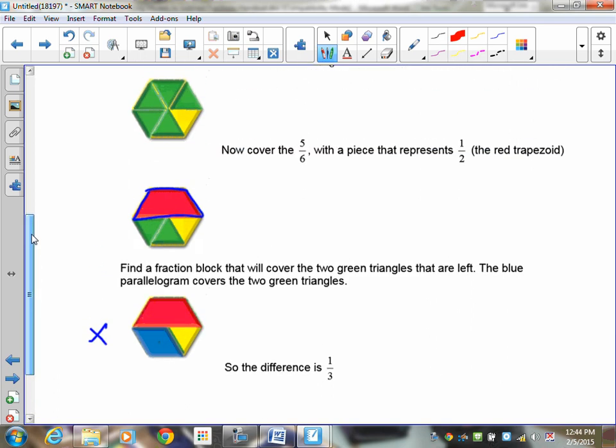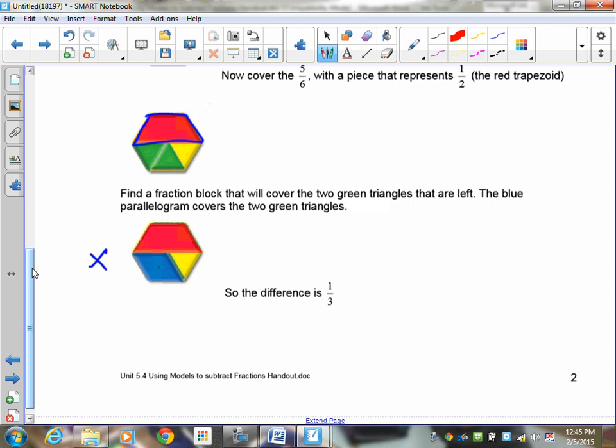Okay, so I've got 1 half taken away from the 5 sixths. So those green triangles that would have normally been here, they're covered so we count them as being gone. And that leaves me with this shape here and this shape here left. Now we know that one blue rhombus will cover that. And the blue rhombus is 1 third so we know that 5 sixths take away 1 half leaves me with 1 third showing. So that's my answer, 1 third.